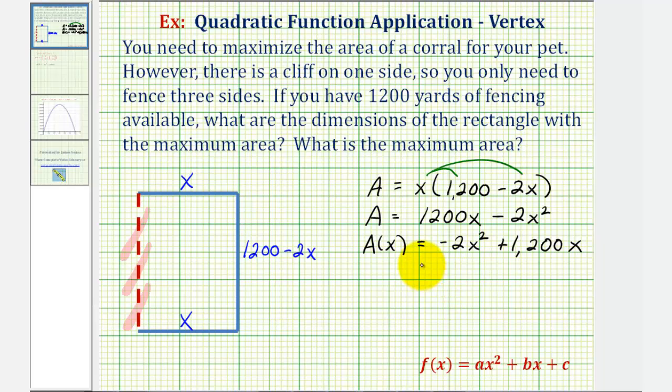And now that our quadratic is in this form here, we should be able to recognize that the coefficient of x squared, or a, is equal to negative 2. B, the coefficient of x, is equal to 1,200. And because there's no constant term, that means c would be equal to zero.